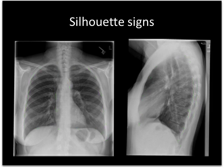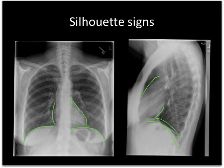The silhouette sign is such a key finding for a multitude of different processes within the thorax that I pay special attention to it. We want to make sure we can see the pericardial line — can we see the left heart border? Can we see the right heart border? If not, why not? Can we see both hemidiaphragms on both studies? Can we see the back of the heart? Can we see the front of the heart? Is there something lying up against it that's obscuring it, and if so, what?